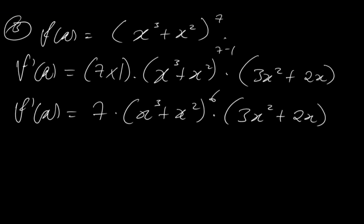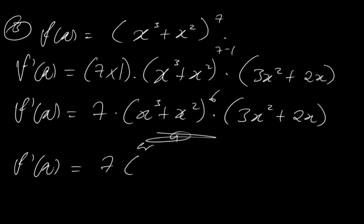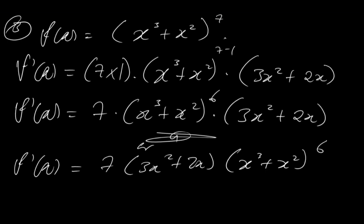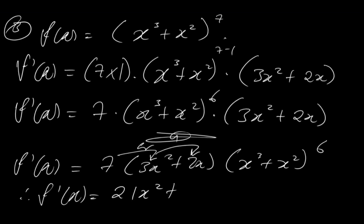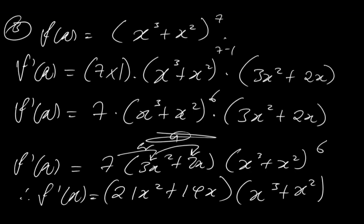Others would leave their answers here, but if you want you can simplify further and say f prime of x is equal to 7 times (3x squared plus 2x) times (x cubed plus x squared) to the power of 6. Therefore f prime of x is equal to 21x squared plus 14x, multiplied by (x cubed plus x squared) to the power of 6. This is our final answer.